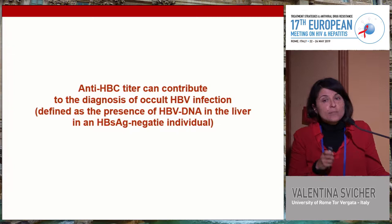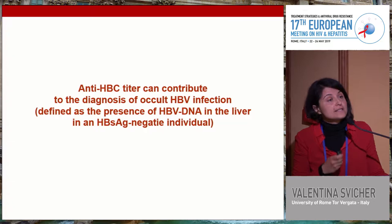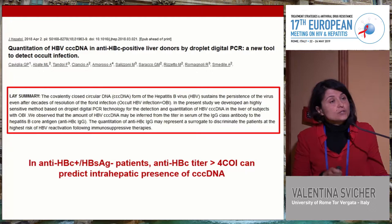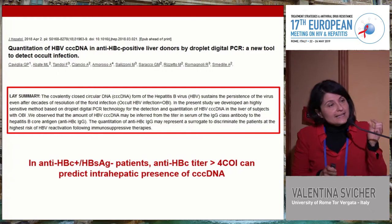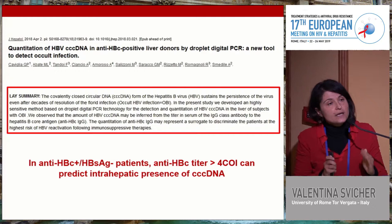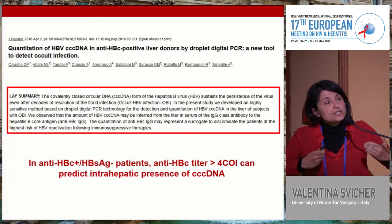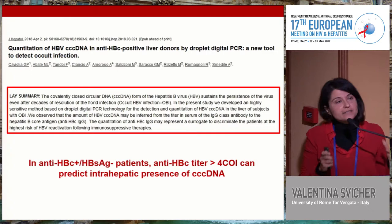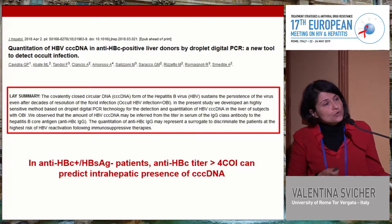Interestingly, anti-core titer may play a role in the diagnosis of occult HBV infection — defined as the presence of cccDNA in the liver in an individual who is HBsAg-negative. A study conducted on liver biopsies from anti-core positive and HBsAg-negative patients shows that a specific threshold of anti-core titer can predict the intra-hepatic presence of cccDNA, presumably transcriptionally active cccDNA producing viral antigens and stimulating antibody production.